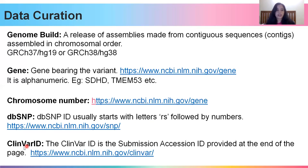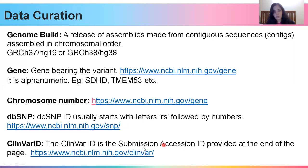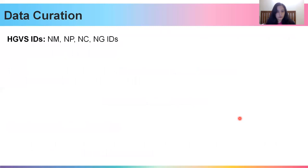You should also collect the ClinVar ID. ClinVar is a database that talks about clinically relevant variants and allots a submission accession ID to each submission. Your variant's page will typically have a submission accession ID, which you should copy so you know which page to go to when you want to look at that variant in greater detail later. You should also generate all the HGVS IDs as done in the last class.